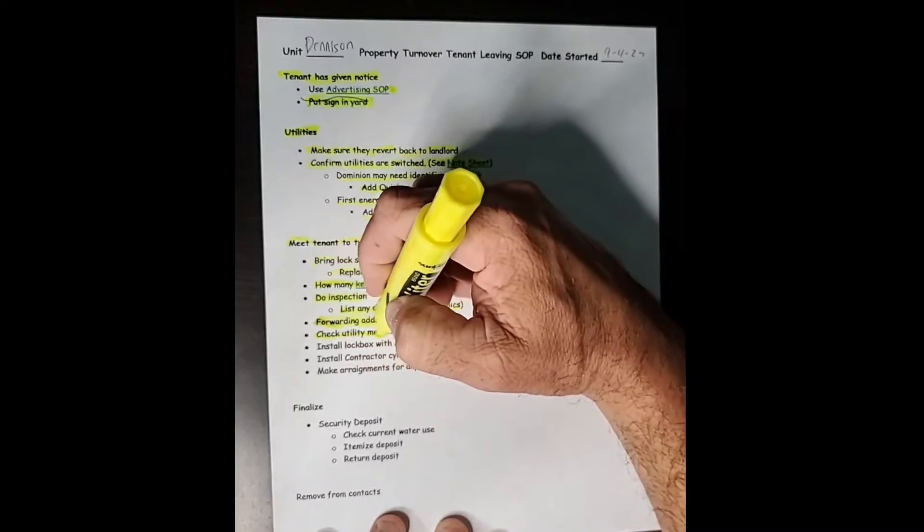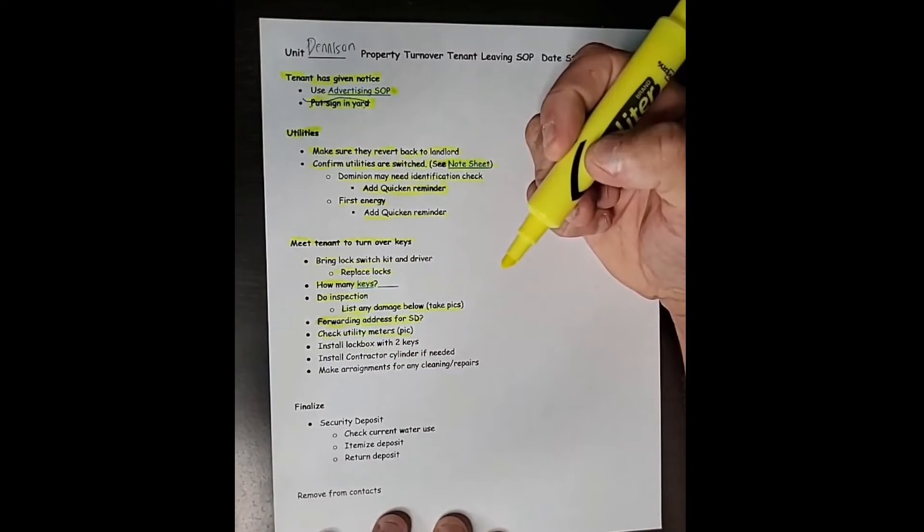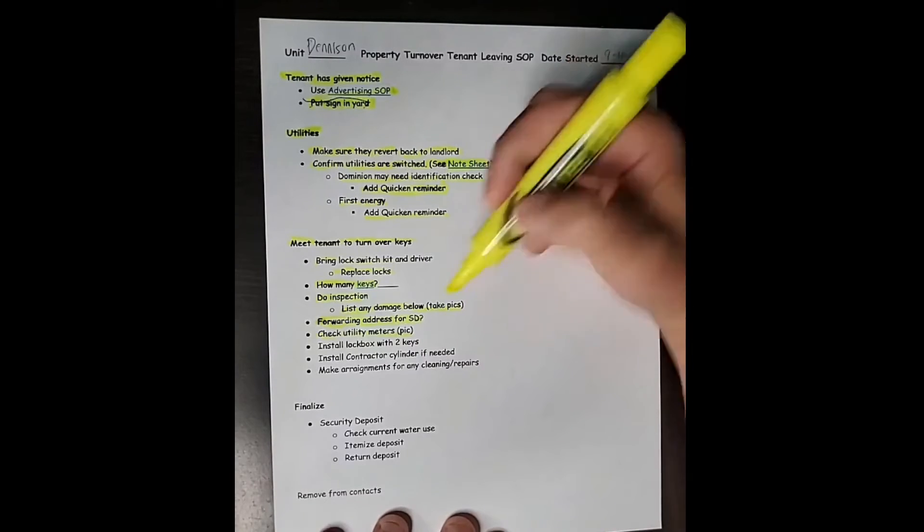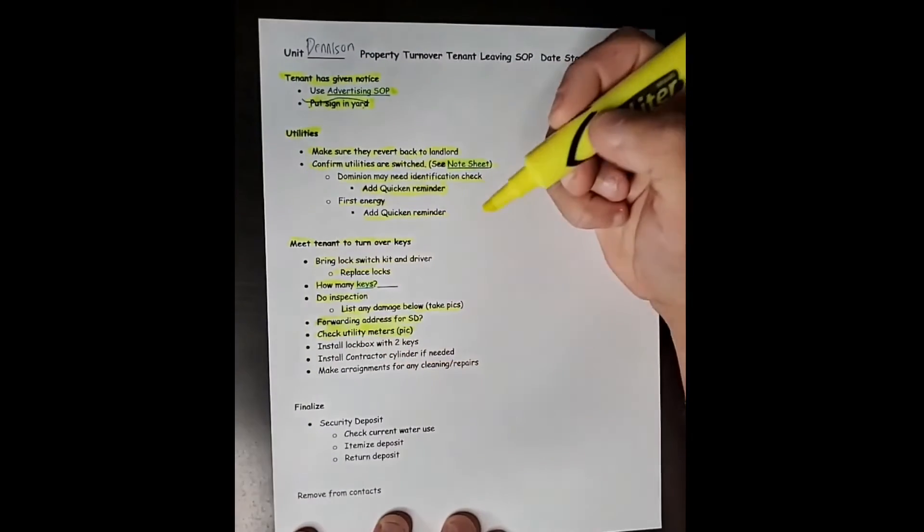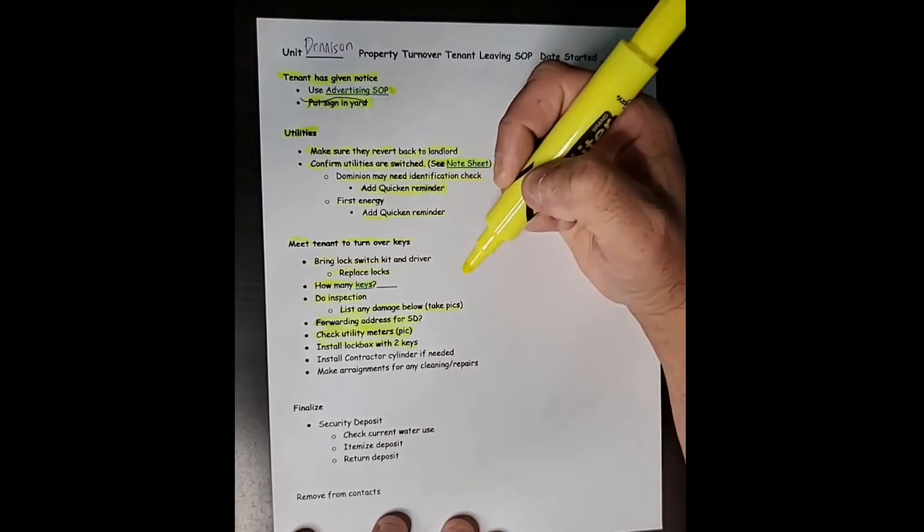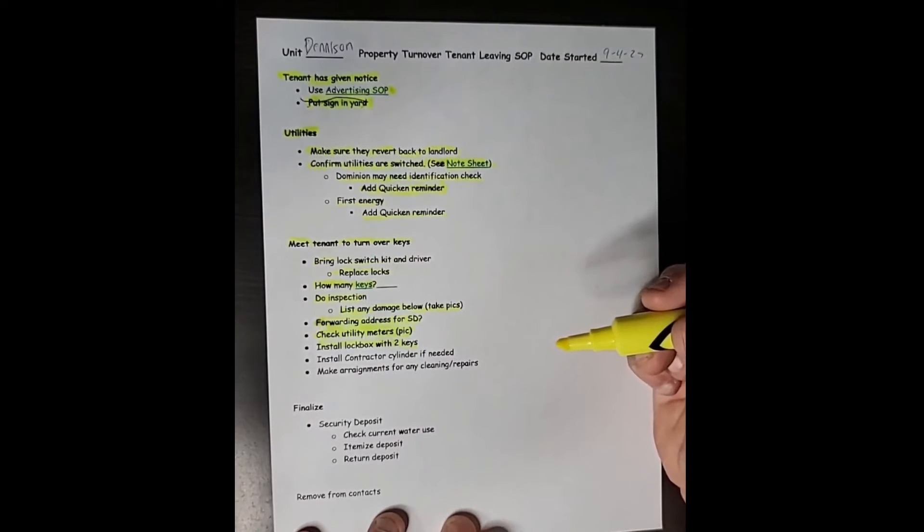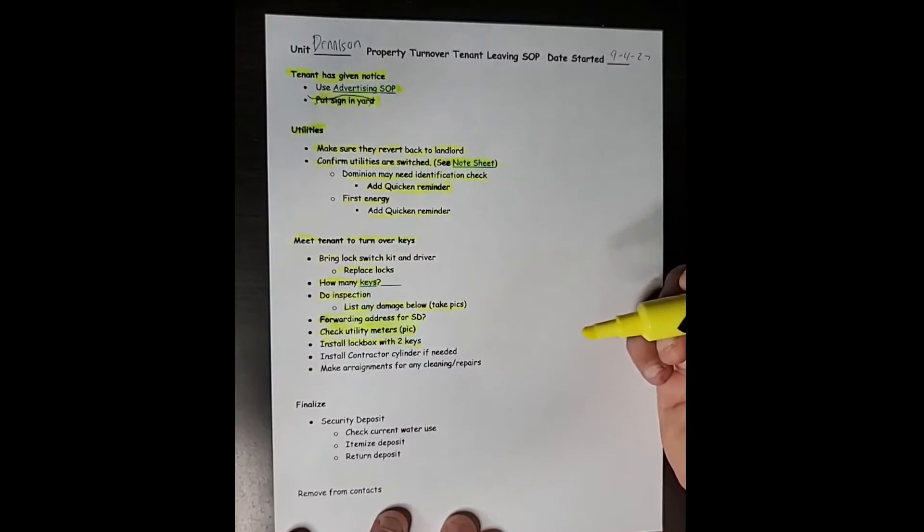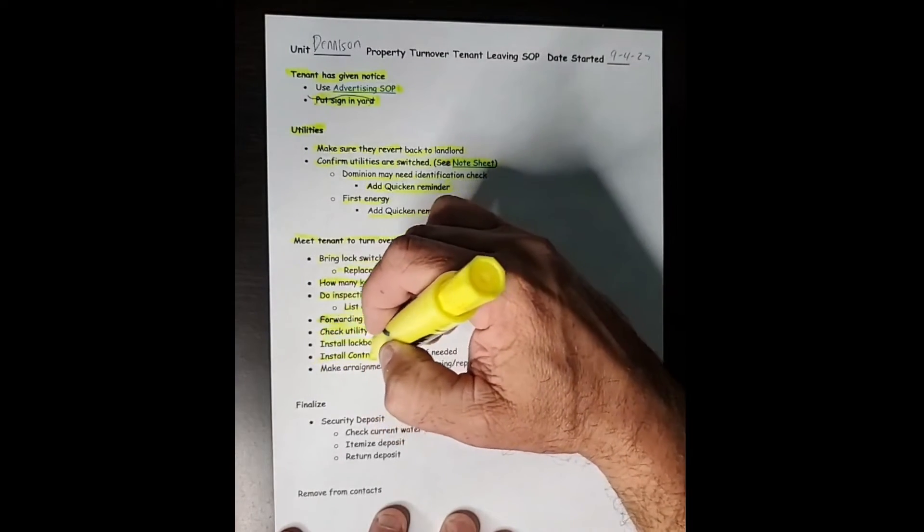I'm going to check the utility meters. I'm going to take a picture of them because I just kind of want to see if any extra water has been used or whatever. I sometimes will install a lockbox with keys in it for contractors if somebody has to come in and clean or do a repair. Because I do not do a lot of these repairs on my own anymore. I did for my first few properties, I saved money doing that. Now, I would rather save time. So rather than trading my time for money, I like to trade my money for time at this point.